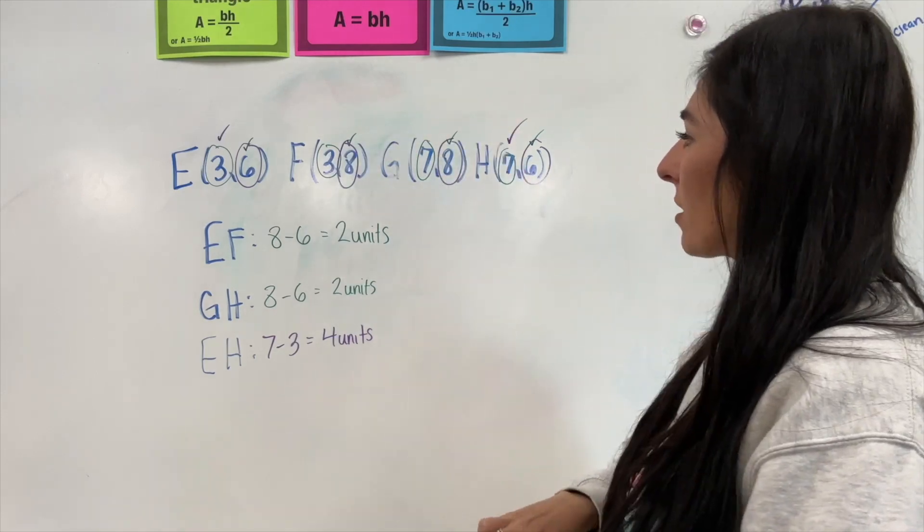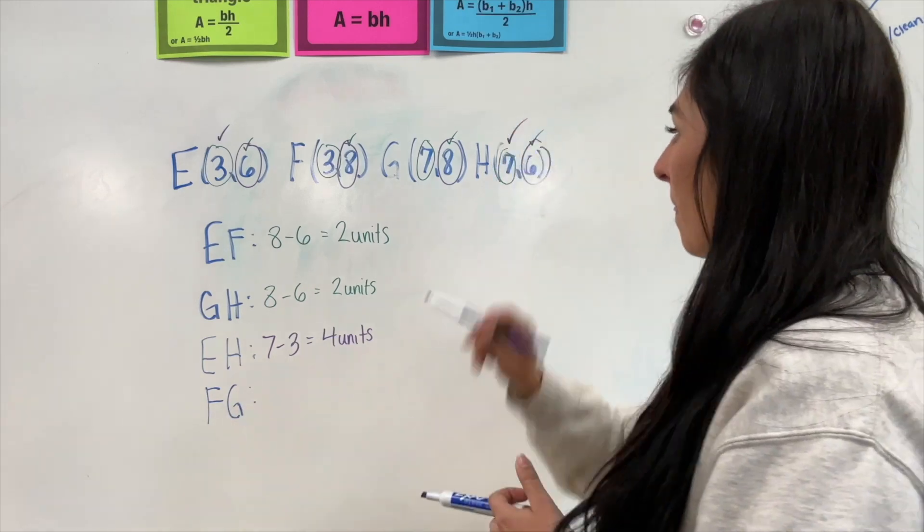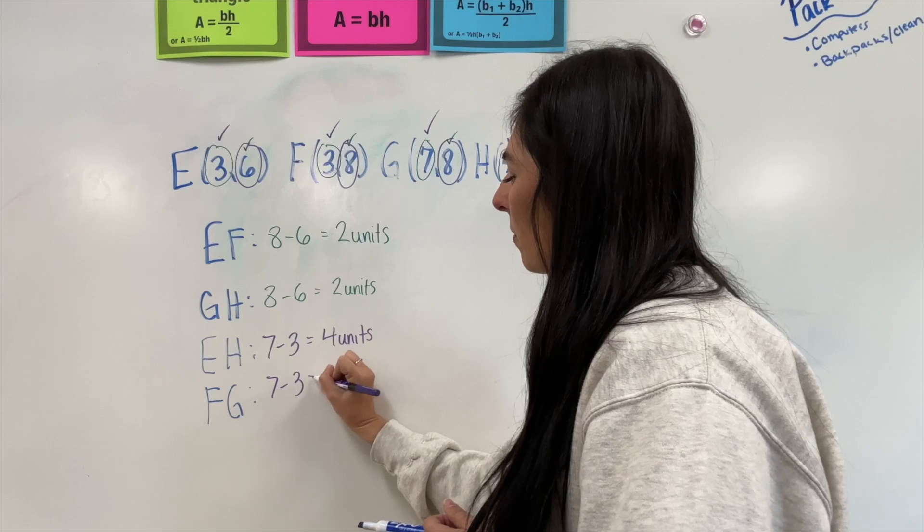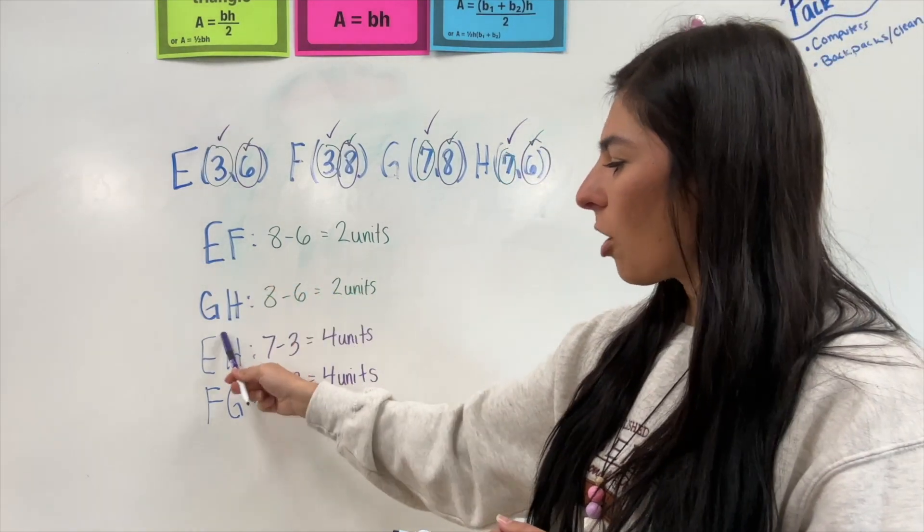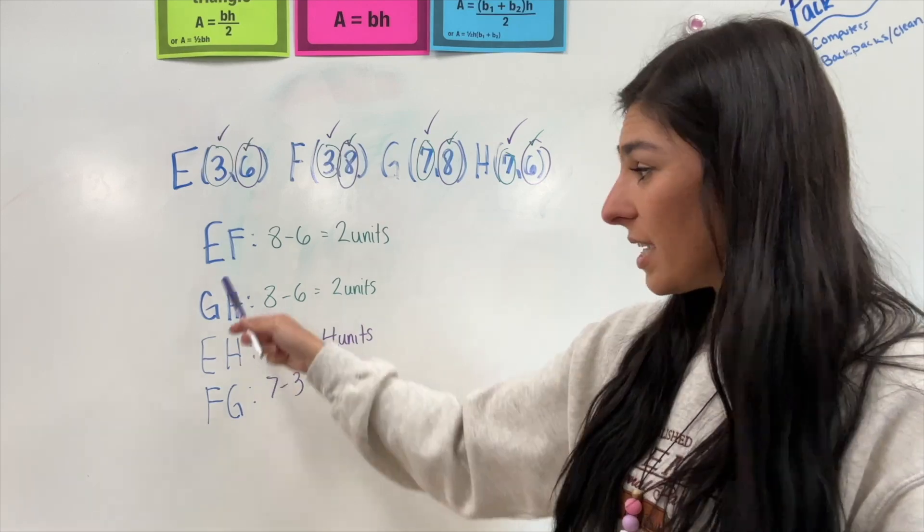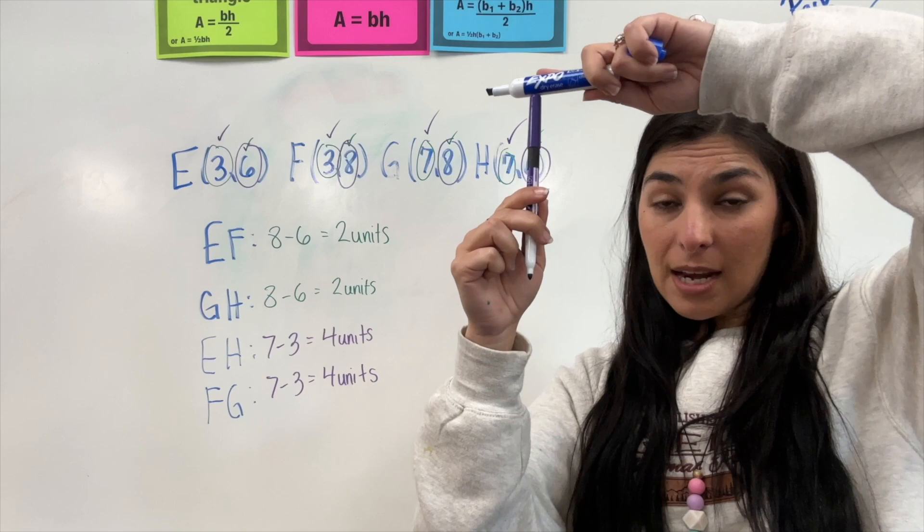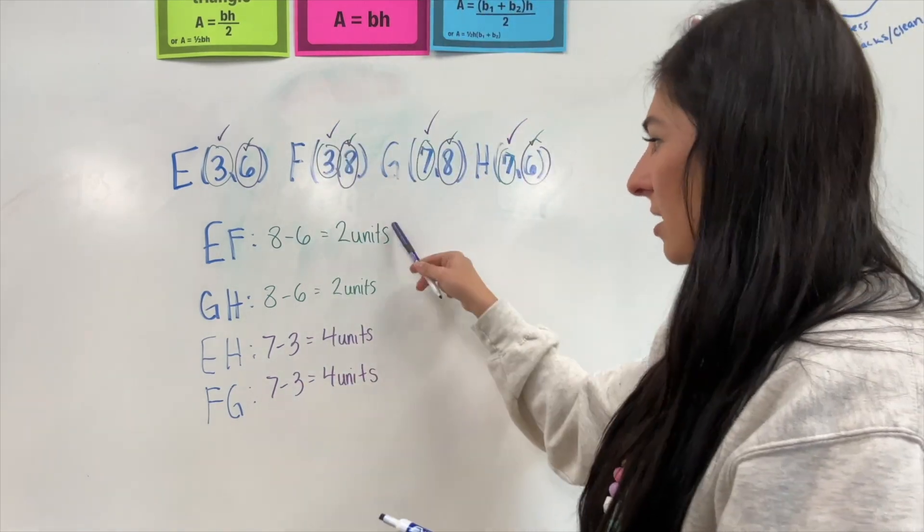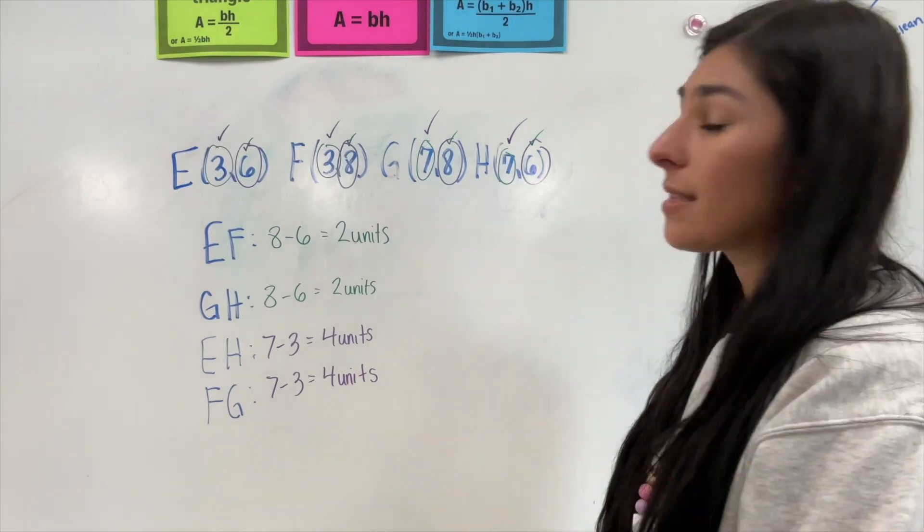Same thing over here. My eights match. So, that's going to be F and G. The ones that don't match, I subtract. Seven take away three. Okay, and these are just where they connect. So, these are the vertices. So, they'll connect at E and F, G and H, and so forth. So, these are just the areas of each side. Let's go ahead and add them together in order to find the perimeter.